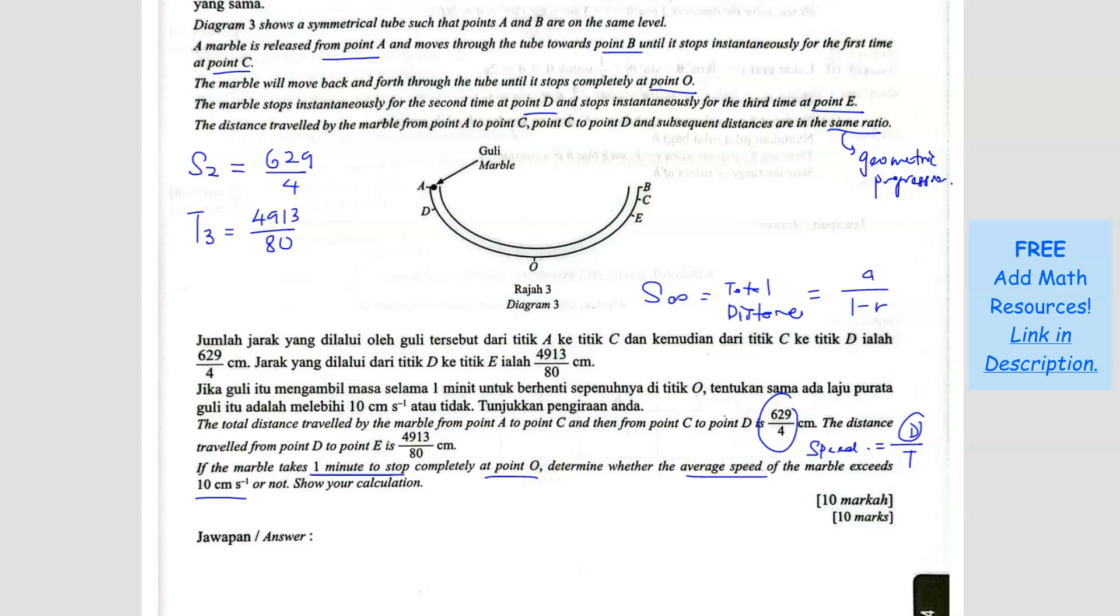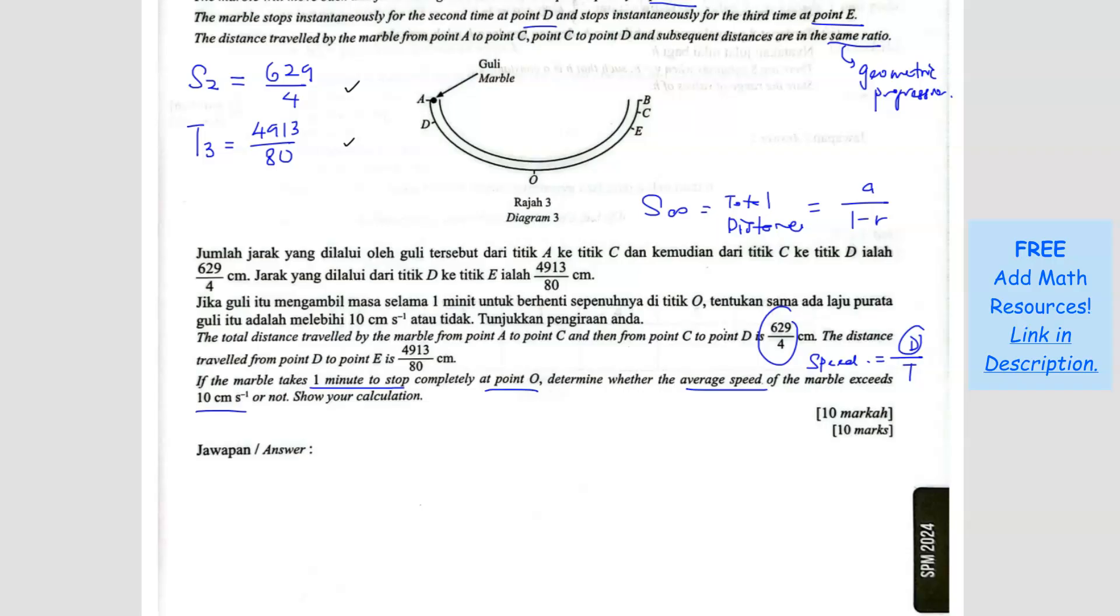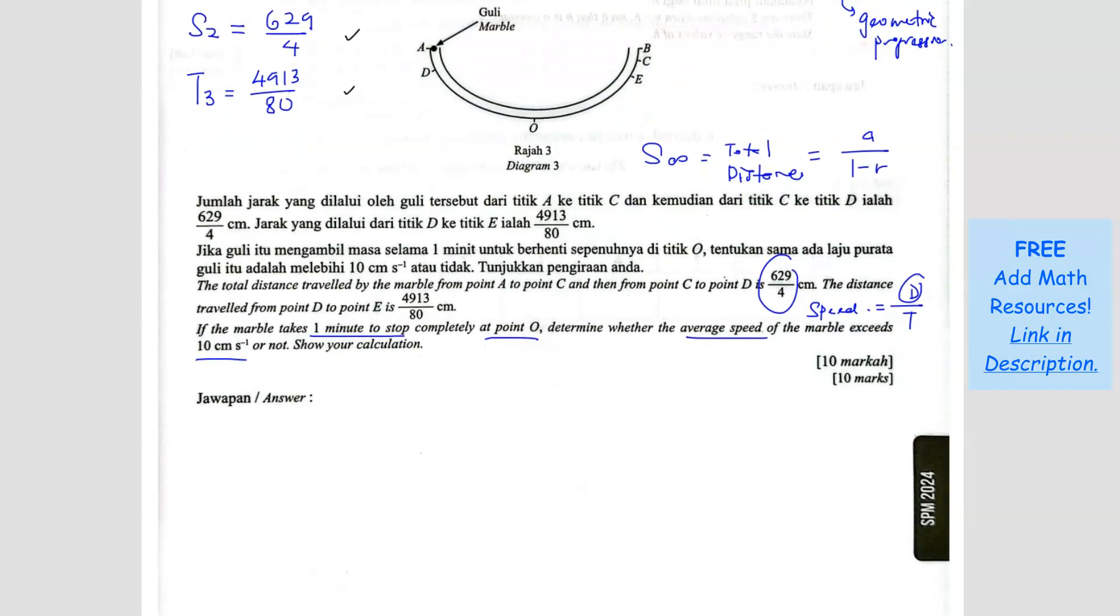A and R we can find using the two information given here. By using these two equations, we can find the A and the R through simultaneous equation. We're going to do that together.